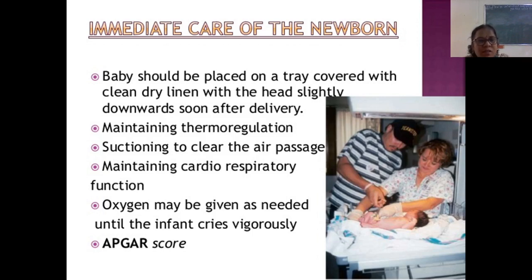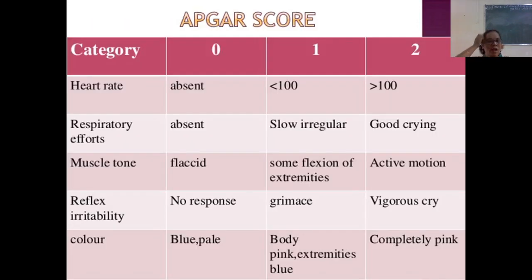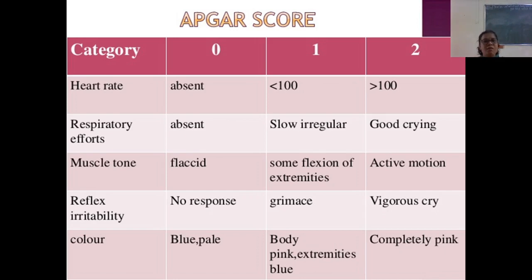Cardiorespiratory function must be maintained. Oxygen must be administered as needed until the infant cries vigorously. The Apgar score is checked at 1 and 5 minutes, assessing heart rate, respiratory efforts, muscle tone, reflex irritability, and color. When all signs are absent, the score is 0. If heart rate is less than 100 with slow irregular respiratory efforts, some flexion of extremities, grimace, and body pink with blue extremities, the score is 1. When heart rate is greater than 100 with a good cry, active motion, and completely pink color, the score is 2.